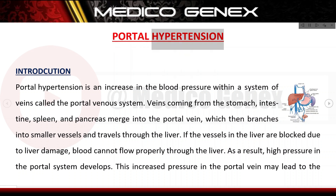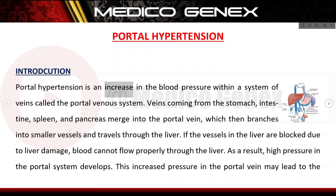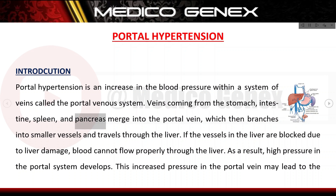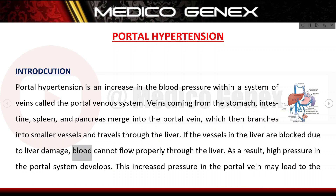Portal hypertension is an increase in the blood pressure within a system of veins called the portal venous system. Veins coming from the stomach, intestine, spleen, and pancreas merge into the portal vein, which then branches into smaller vessels and travels through the liver.